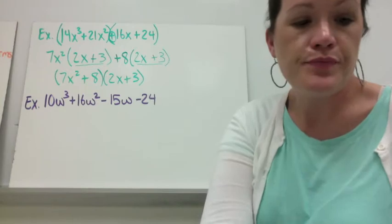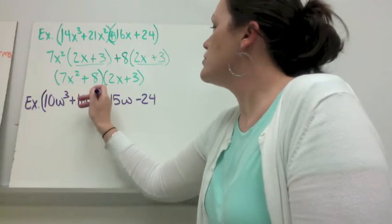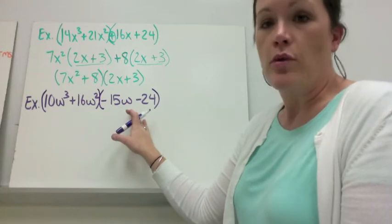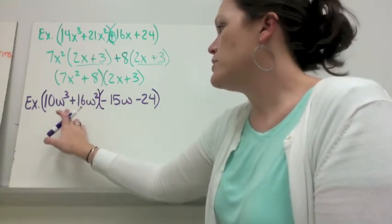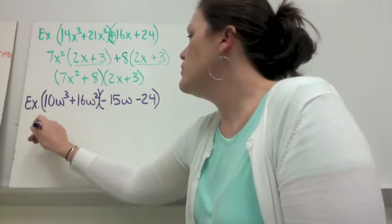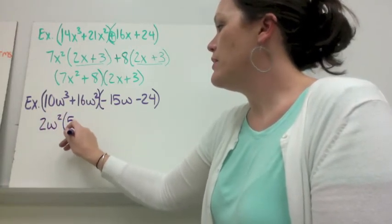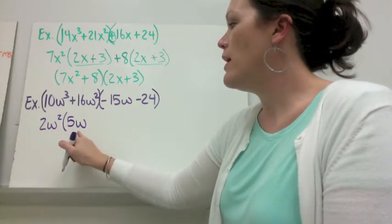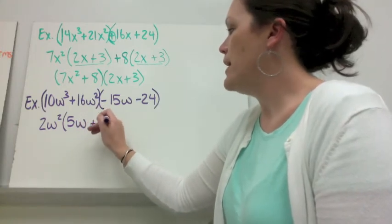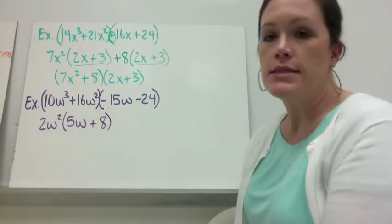Let's do example two. Here's another polynomial with four terms. Group the first two terms and the last two terms. The greatest common factor between 10w cubed and 16w squared would be 2w squared. Then I would have left 5w, because 2w squared times 5w would give me back 10w cubed. And 2w squared times 8 would give me back 16w squared.